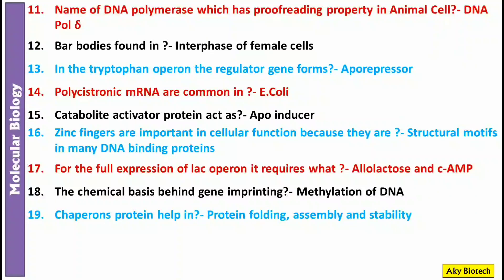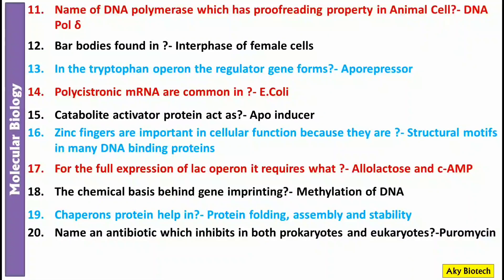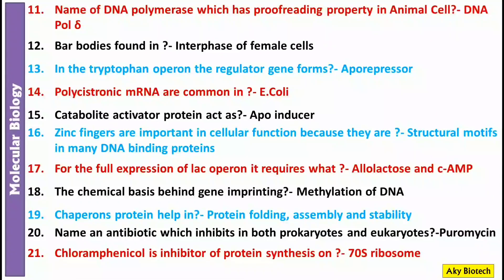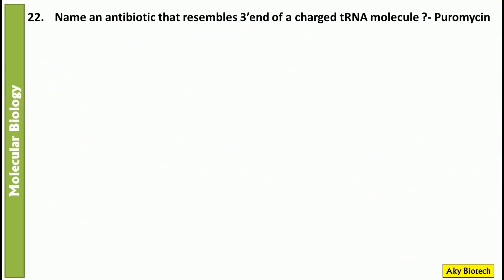Question 20: Name an antibiotic which inhibits protein synthesis in both prokaryotes and eukaryotes — it's puromycin. This question has been asked many times in the ICAR-NET examination. Question 21: Chloramphenicol is an inhibitor of protein synthesis on the 70S ribosome — please note this, it's also very important. Question 22: Name an antibiotic that resembles the 3-prime end of a charged tRNA molecule — it's puromycin again.